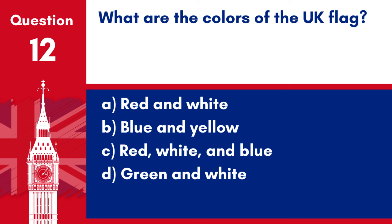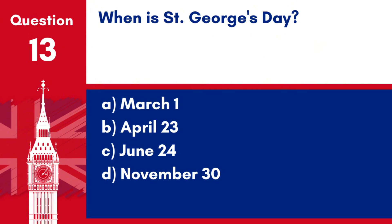Answer: c. Red, white and blue. The Union Jack combines these colours, representing the union of different parts of the UK.